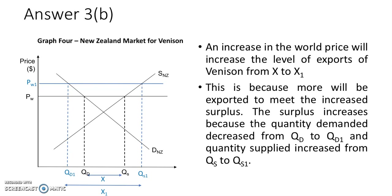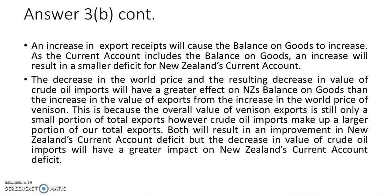The question also asks about the current account - somewhere in trade questions on exchange rate, two-country models, or price takers, there will be a current account question. Here we have a merit-level chance to explain the effect of increased exports on the current account balance. Increased export receipts from venison improve the balance of goods, reducing New Zealand's current account deficit. You are expected to know that New Zealand has a deficit on the current account.